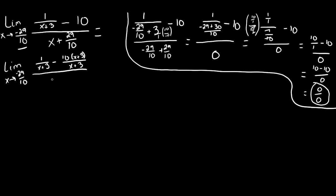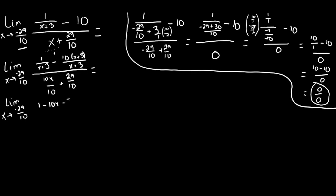In the same step, let's look at the denominator. We understand that anything by itself is over 1, so we have denominators of 1 and 10, making our least common denominator 10. So we get 10x over 10 plus 29 over 10. Now let's distribute this 10 into the polynomial up in the numerator and combine everything into one fraction. So we get 1 minus 10x — this negative 10 is going to cause a minus 30 — so it's like multiplying negative 10 times x and negative 10 times 3.